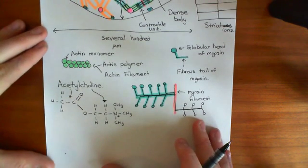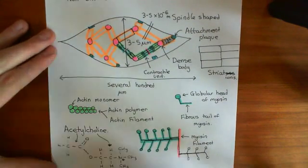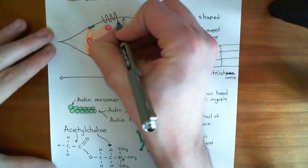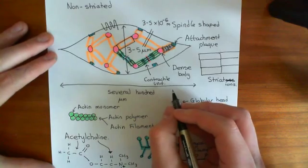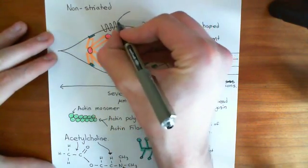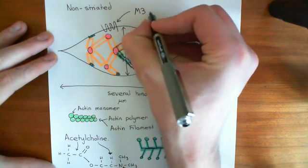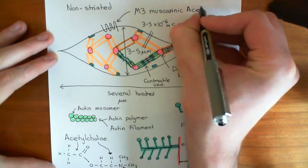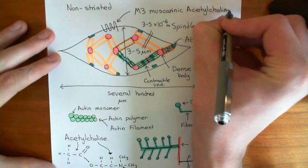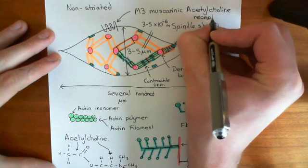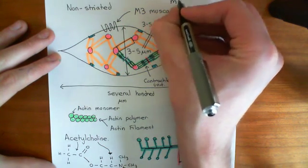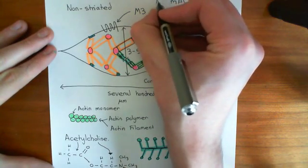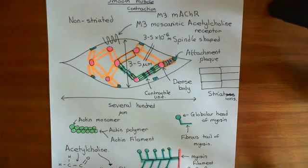Acetylcholine has receptors on the smooth muscle cell which are G-protein-coupled receptors. G-protein-coupled receptors have these seven transmembrane domains. The specific type of receptor for acetylcholine that smooth muscle cells generally have is known as the M3 muscarinic receptor — the M3 muscarinic acetylcholine receptor. Muscarinic acetylcholine receptors are often abbreviated to M for muscarinic, ACH for acetylcholine, and R for receptor. So this is the M3 muscarinic acetylcholine receptor.